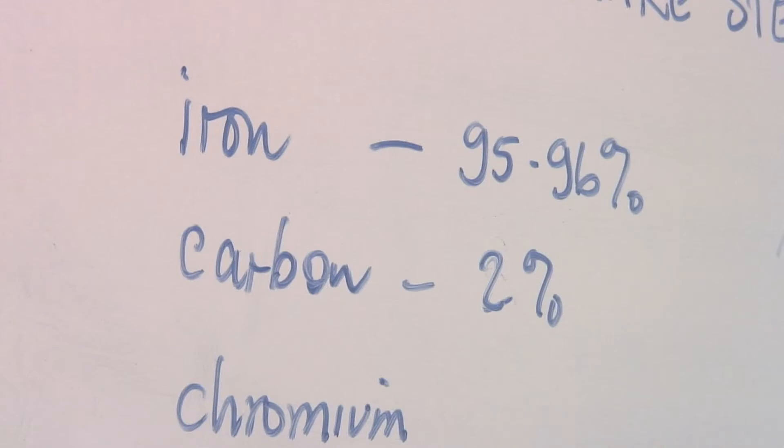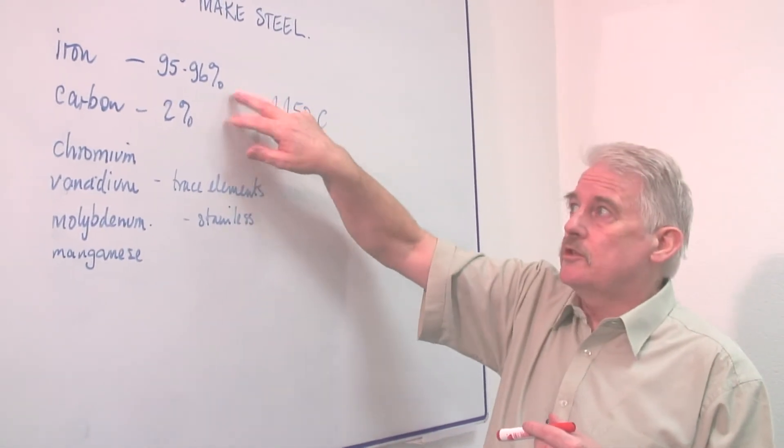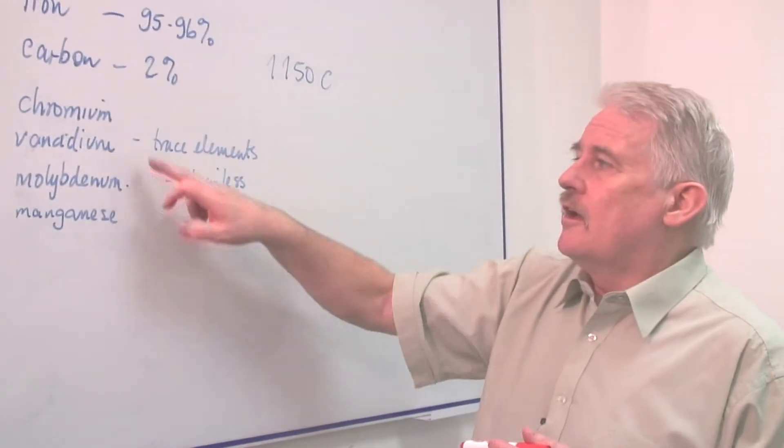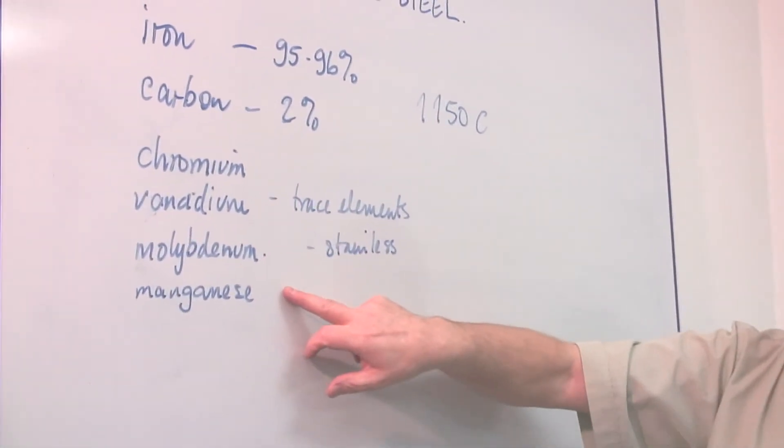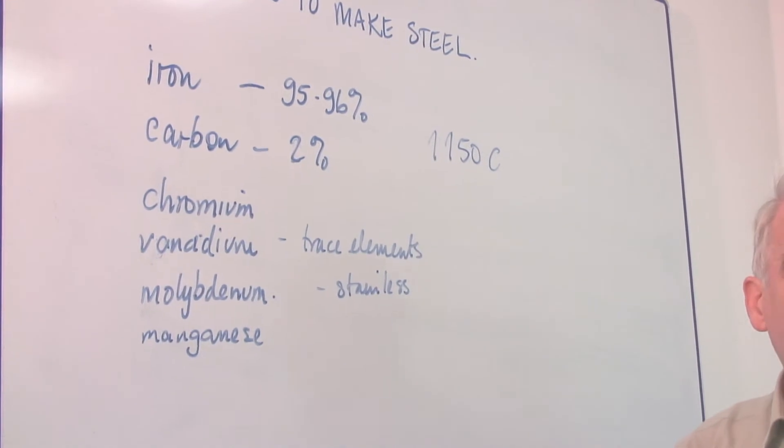The additional thing we can do with the steel, which is the iron and carbon, is we can add other materials: chrome, vanadium, manganese, molybdenum, all of these, smaller amounts of these included into the steel, improve certain properties.